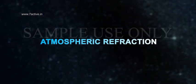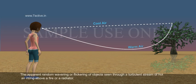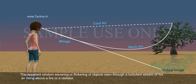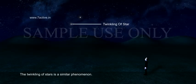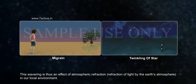Atmospheric Refraction. We have observed some natural phenomena in our daily life, such as the apparent random wavering or flickering of objects seen through a turbulent stream of hot air rising above a fire or a radiator. The twinkling of stars is a similar phenomenon. This wavering is thus an effect of atmospheric refraction — refraction of light by the Earth's atmosphere in our local environment.